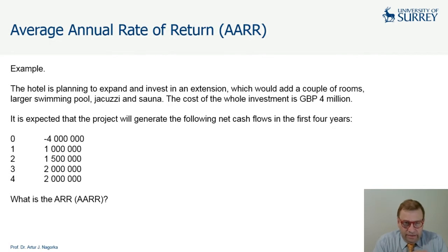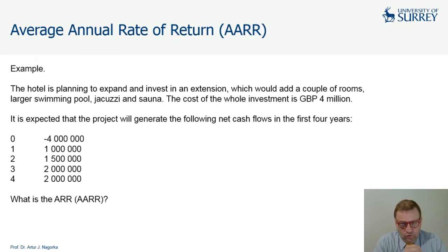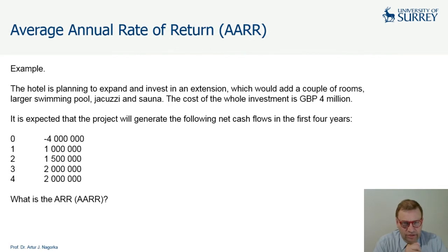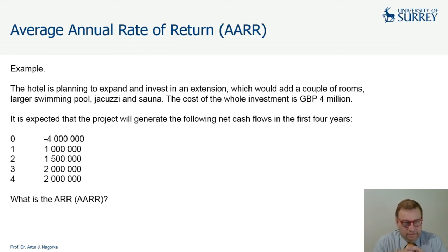You are running a hotel and you are planning to invest, expand, and build an extension with some rooms, a larger swimming pool, jacuzzi, and sauna. This investment will cost you four million pounds, and it is expected that this project will generate cash flows in the first four years of: one million, one and a half million, two million, and two million.